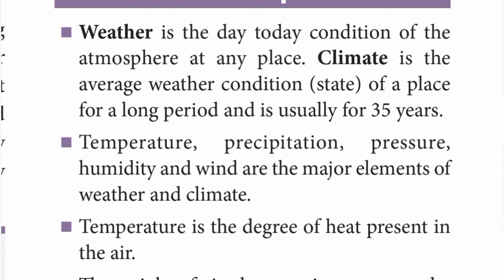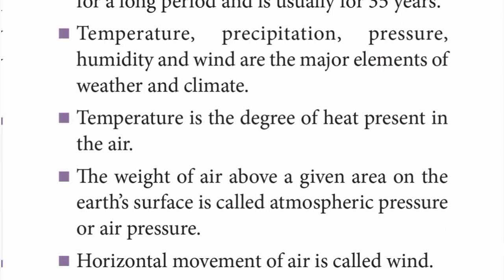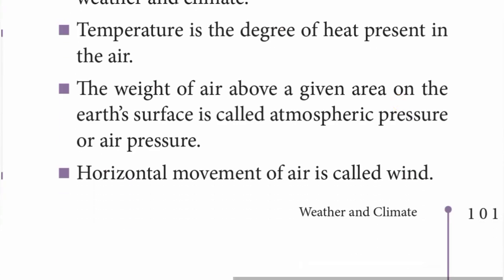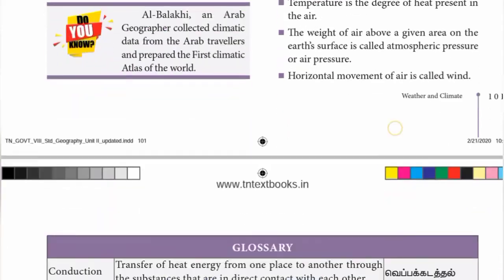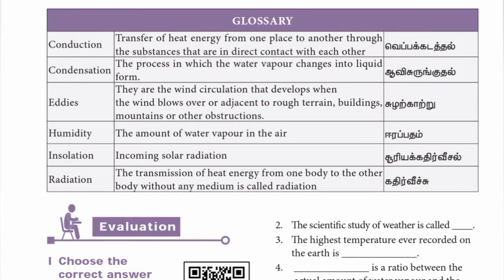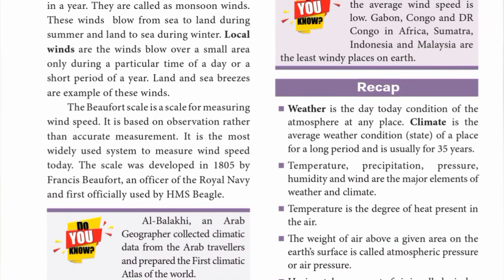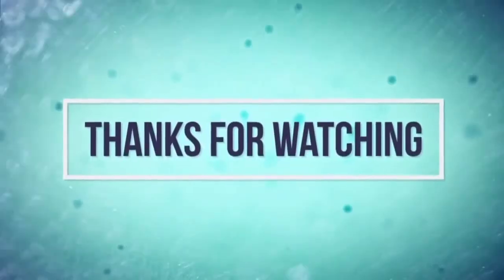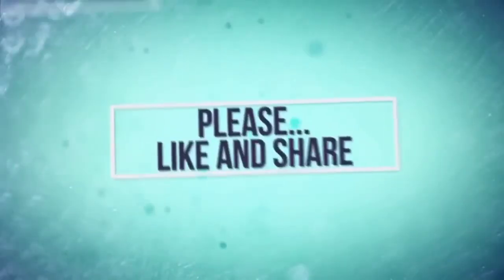Temperature is the degree of heat present in the air. The weight of air above a given area on the earth's surface is called atmospheric pressure. The horizontal movement of air is called wind. This lesson is a summary. The bookmark exercise and mind map have already been uploaded. Thank you for your support.